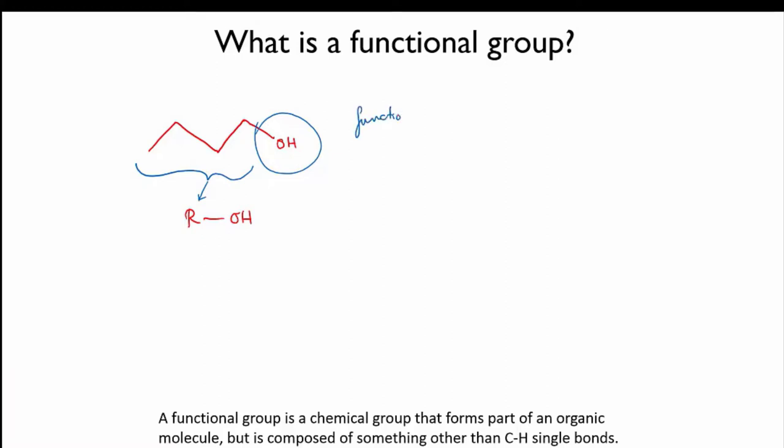In the molecule I drew above, the functional group is the OH, the backbone, if you like, of the molecule is butane, but we have this extra OH group attached, and it's called a functional group. There are many kinds of functional groups, and this particular one is called an alcohol. Let's have a look at some more.